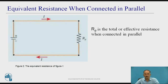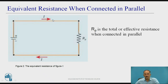Therefore, the equivalent resistance when connected in parallel is Rp. Rp is the total or effective resistance when connected in parallel. In the equivalent diagram, there is a battery or voltage source and current flowing across this is I, and Rp is the total or effective resistance.